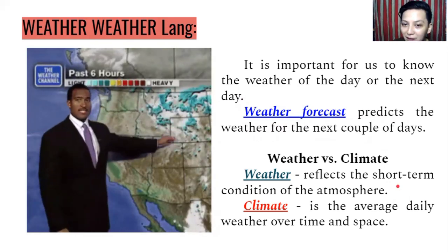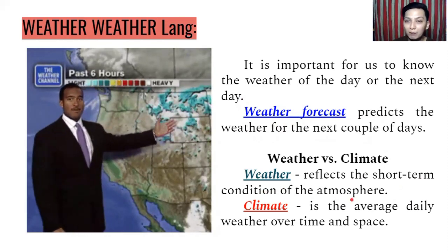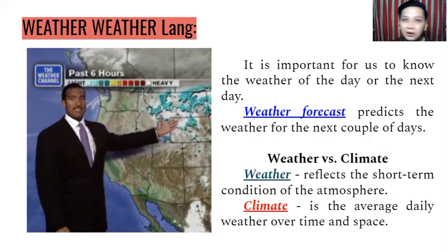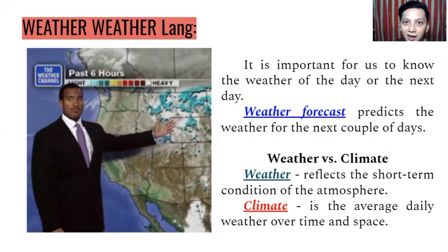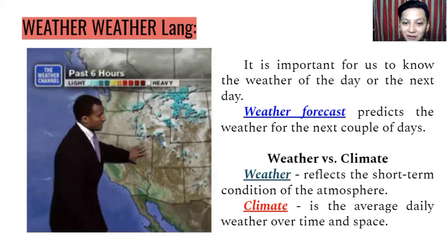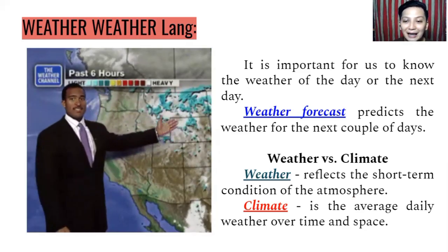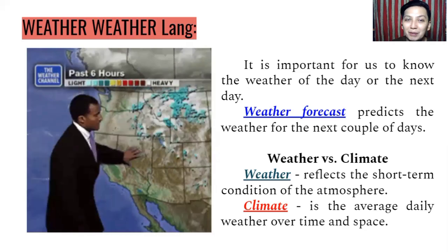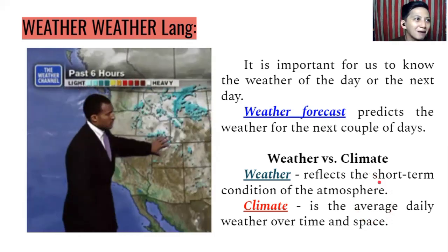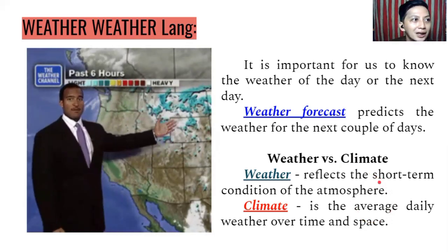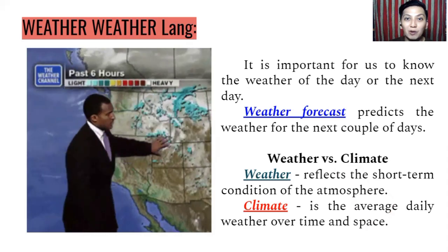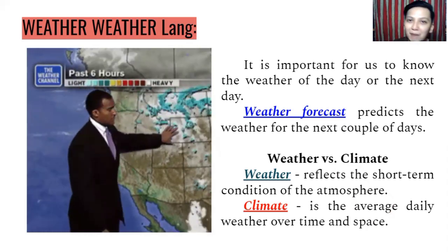What is the difference between weather and climate? Weather reflects the short-term condition of the atmosphere — it can be cloudy, windy, rainy, or entirely sunny in one day for a short period of time. On the other hand, climate is the average daily weather over time and space, meaning it covers a longer period of time. For example, we have climate seasons: winter, spring, summer, or fall. That is a longer period of time, while weather can change from time to time.